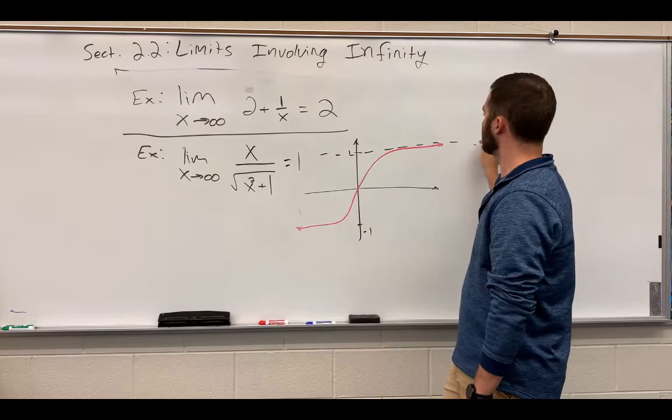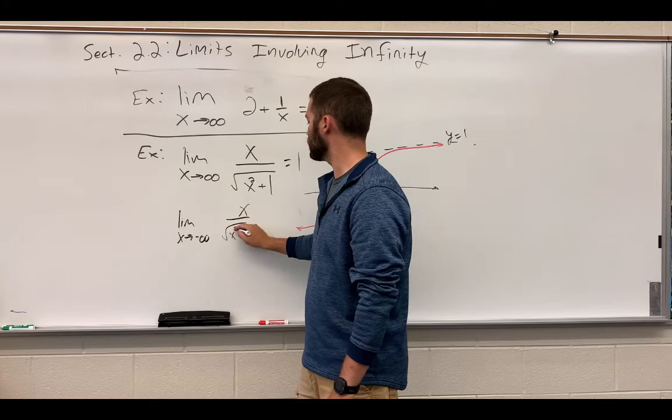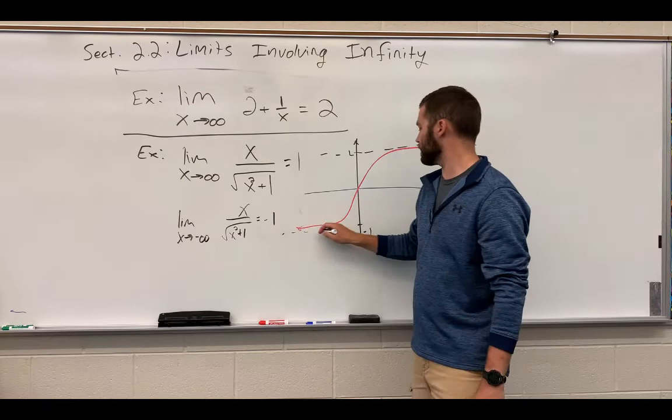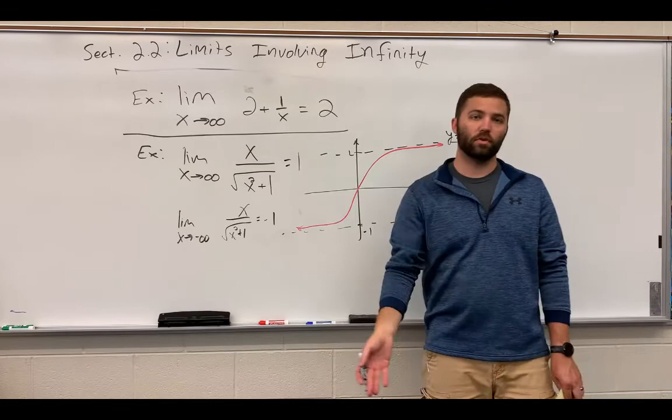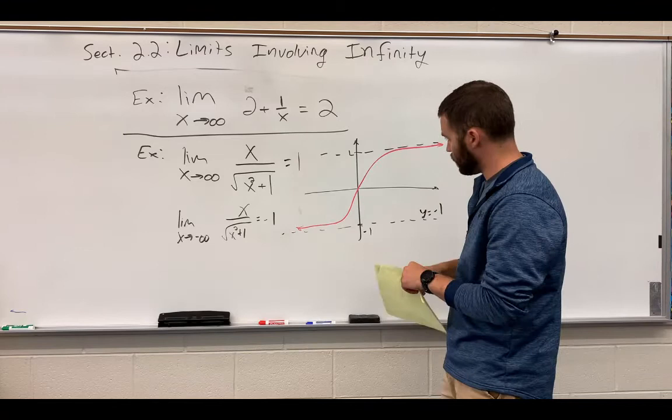Going back the other way, if we check the limit as x approaches negative infinity of x over square root of x squared plus 1, we get negative 1. So we have a horizontal asymptote also at y equals negative 1. So this function has two horizontal asymptotes in each direction, depending on which direction we go. One at y equals negative 1 and y equals 1.